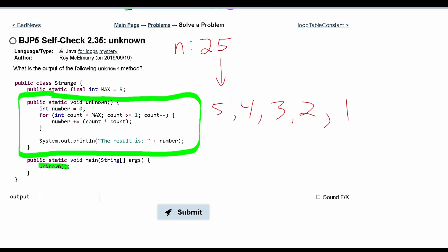We are going to run through this loop again. Now we have number plus equals count times count. Count is equal to 4. So we're going to have 4 times 4, which is 16, plus 25. So now n is going to be equal to 16 plus 25, or 41.